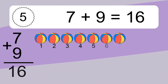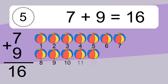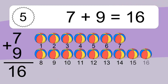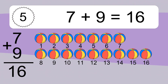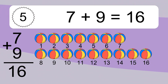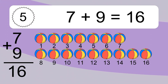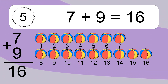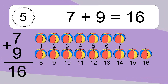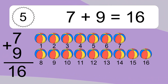7 plus 9 equals 16. Let's count it: 1, 2, 3, 4, 5, 6, 7, 8, 9, 10, 11, 12, 13, 14, 15, 16.